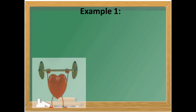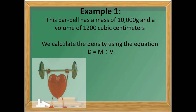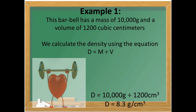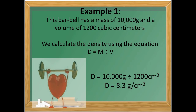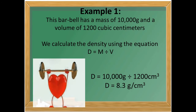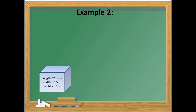Here's our first example. This barbell has a mass of 10,000 grams and a volume of 1,200 cubic centimeters. Using the equation density equals mass divided by volume: density equals 10,000 grams divided by 1,200 centimeters cubed, and we get a density of 8.3 grams per centimeter cubed.